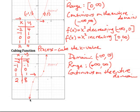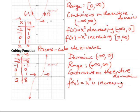Where is the cubing function increasing and decreasing? As we move in the positive x direction, the function values keep getting larger and larger. The function is moving up to the right the entire time, so f(x) = x³ is always increasing on the entire domain — from negative infinity to infinity.